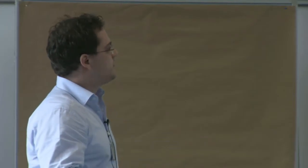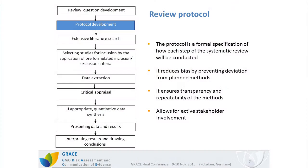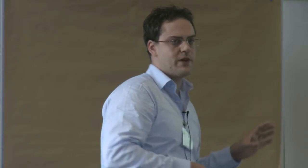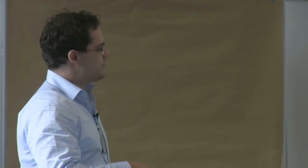Based on the review question, a protocol is developed. The protocol is a formal specification of how each step of the systematic review will be conducted. It reduces bias by preventing deviations from the planned methods. It ensures transparency and repeatability, which is also important to allow for updating by following an agreed evaluation scheme. It allows for active stakeholder involvement, and as an additional quality assurance mechanism it should undergo an independent peer review process.